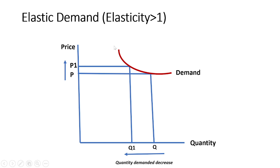In elastic demand, elasticity is greater than 1 because the responsiveness of quantity demanded is more than the price change. When price increases from P1 to P2, quantity demanded changes more than the price change, from Q1 to Q2. So elasticity is greater than 1.